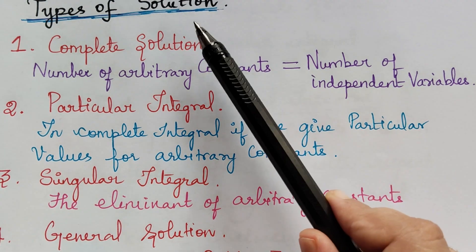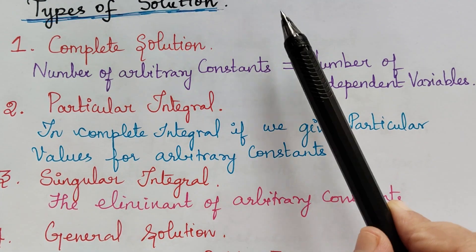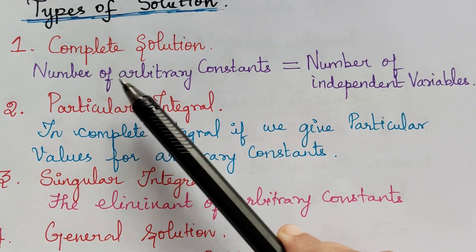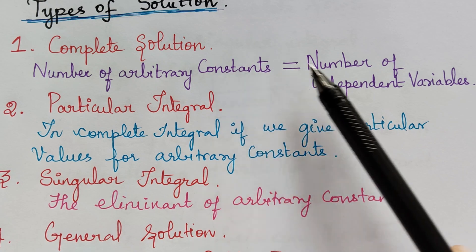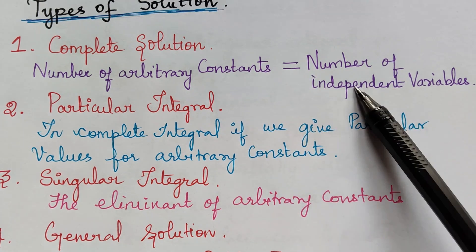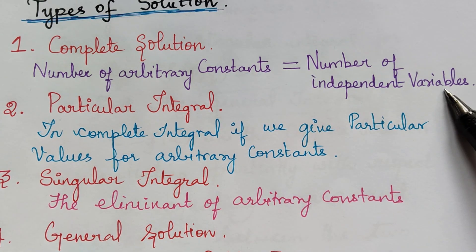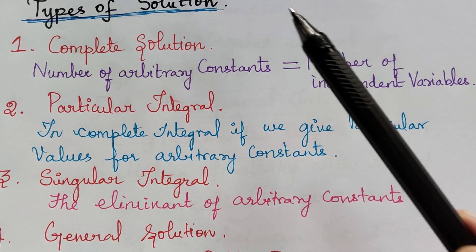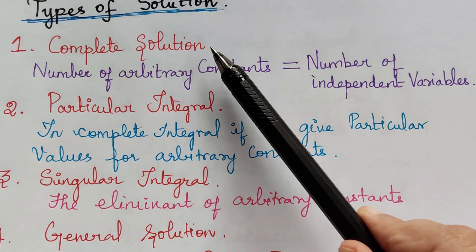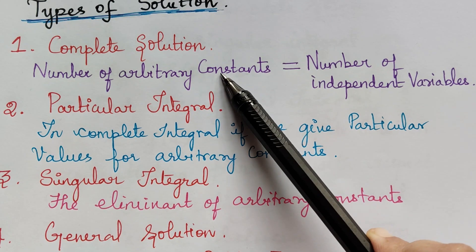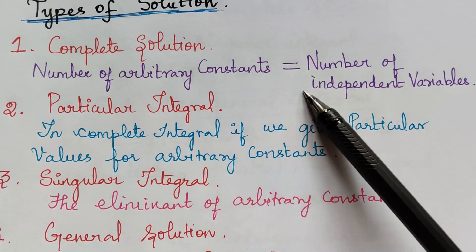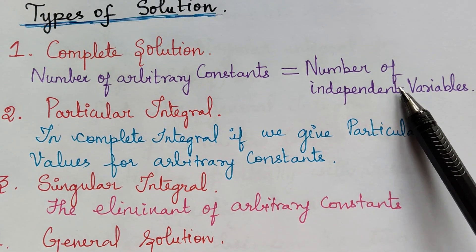So what is a complete solution? If in the solution you have the number of arbitrary constants equal to the number of independent variables, then it is said to be a complete solution, which you will understand better while solving a problem.